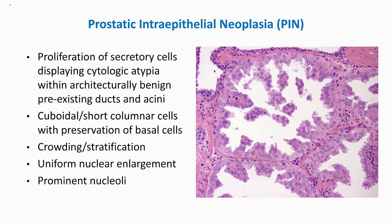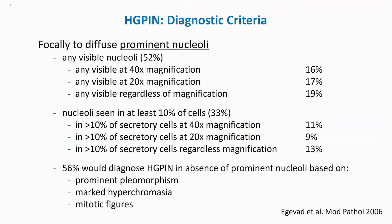There is uniform nuclear enlargement compared to the benign glands at the periphery of the microphotograph. Prominent nucleoli are also seen, and this is one of the characteristic features of high-grade PIN. Diagnostic criteria for high-grade PIN have been evaluated by different investigators, showing variability. However, focal to diffuse prominent nucleoli is one of the most important criteria that everybody seems to agree upon.